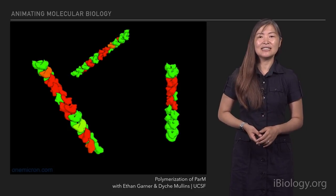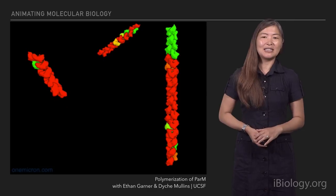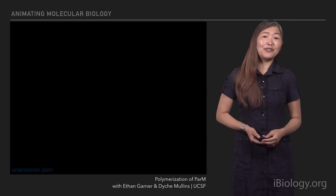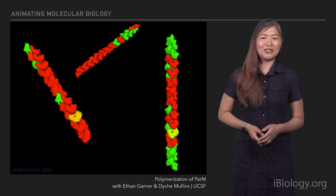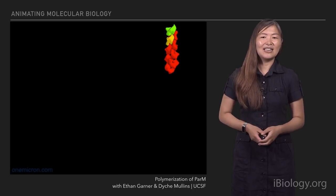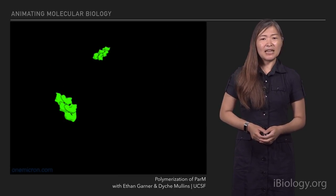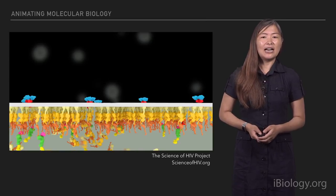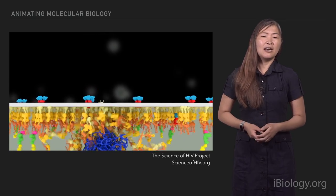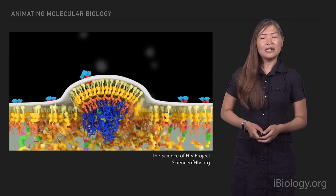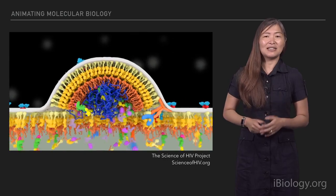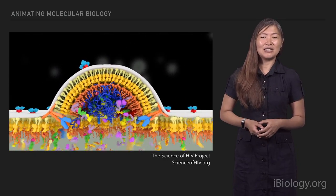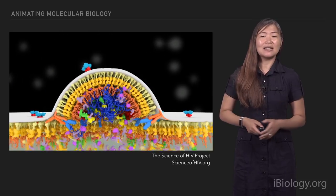First I wanted to show you just a couple of animations, to show a range of different ways animations can be made. This is an animation I made very early in my career that depicts a bacterial actin-like filament that's polymerizing. This was made in collaboration with Ethan Garner and Dyke Mullins. More recently I've been creating more complex animations, like this one showing HIV budding from a cell. Despite major differences in complexity and how many proteins are involved, the steps to create these animations are the same.